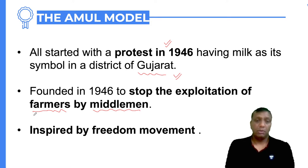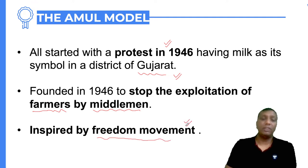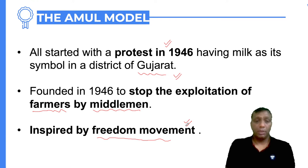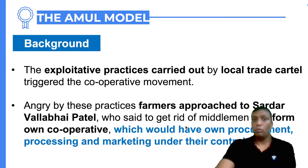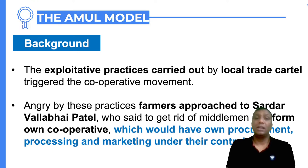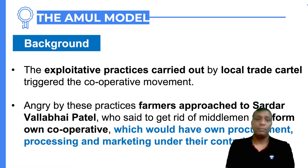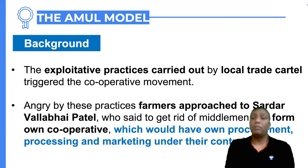The exploitative practices carried out by the local trade cartel — acting as intermediaries — created a lot of problems for farmers involved in the milk production business. This triggered the cooperative movement. The farmers got angry at the middlemen and approached Sardar Vallabhbhai Patel to get rid of them, as the middlemen were very disruptive and exploitative at that time.